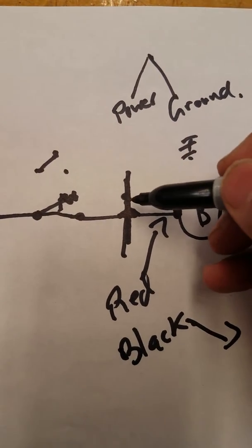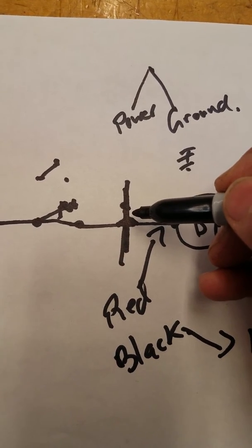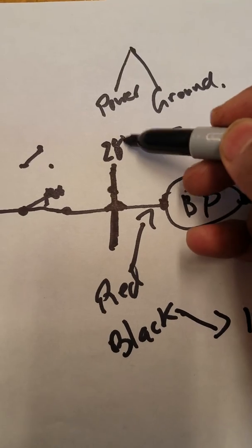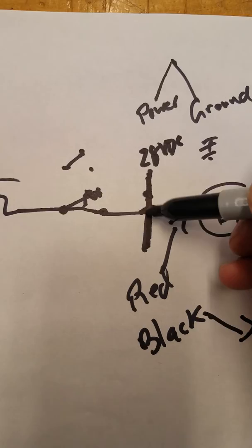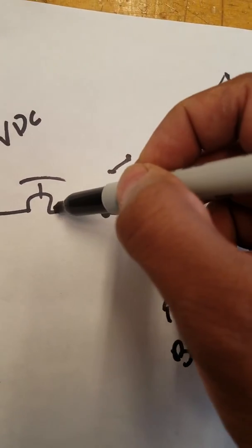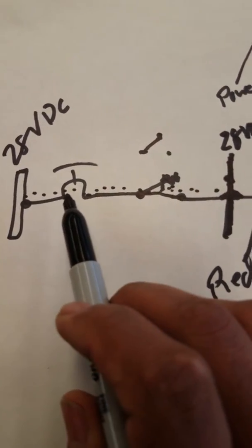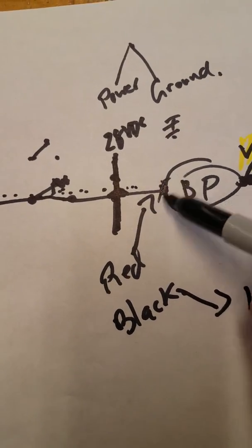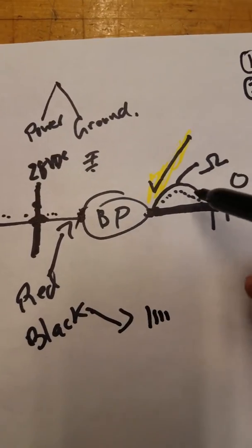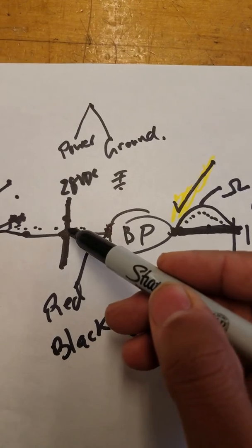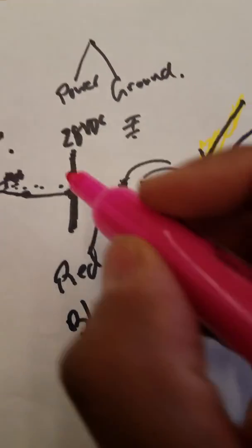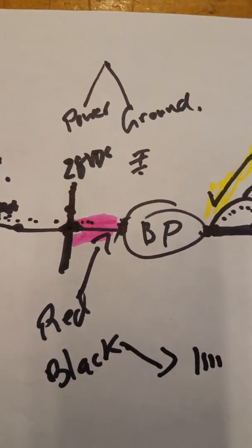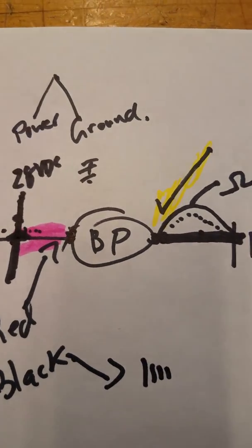If you read 28 volts DC at the terminal strip, that tells you the electrons came from the bus, through the circuit breaker, through the switch, and are waiting at that terminal strip. But somehow they didn't make it to the boost pump. That gives you a clear hint — process of elimination. You had ground, you checked power, no power at the boost pump but power at the terminal strip. So the problem is in the wire between the terminal strip and the boost pump.